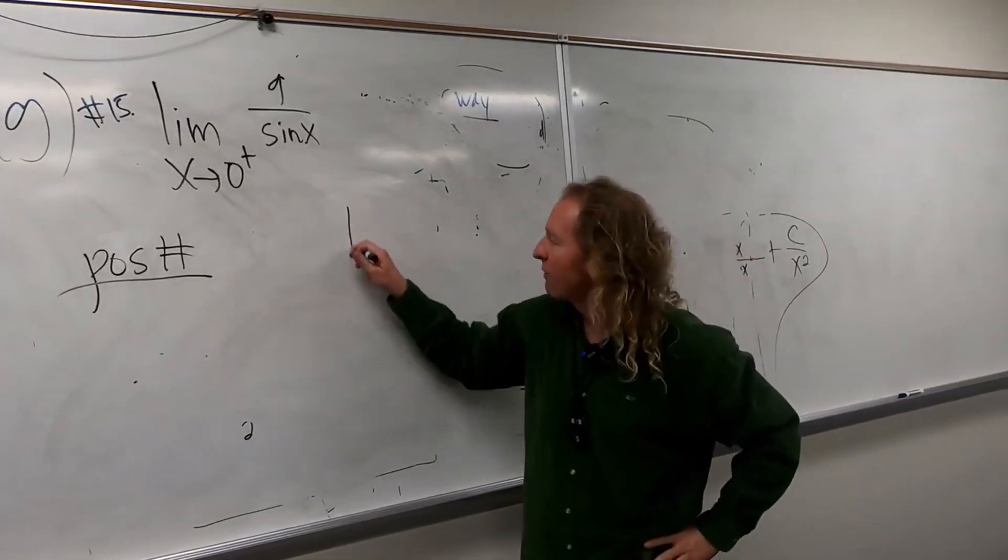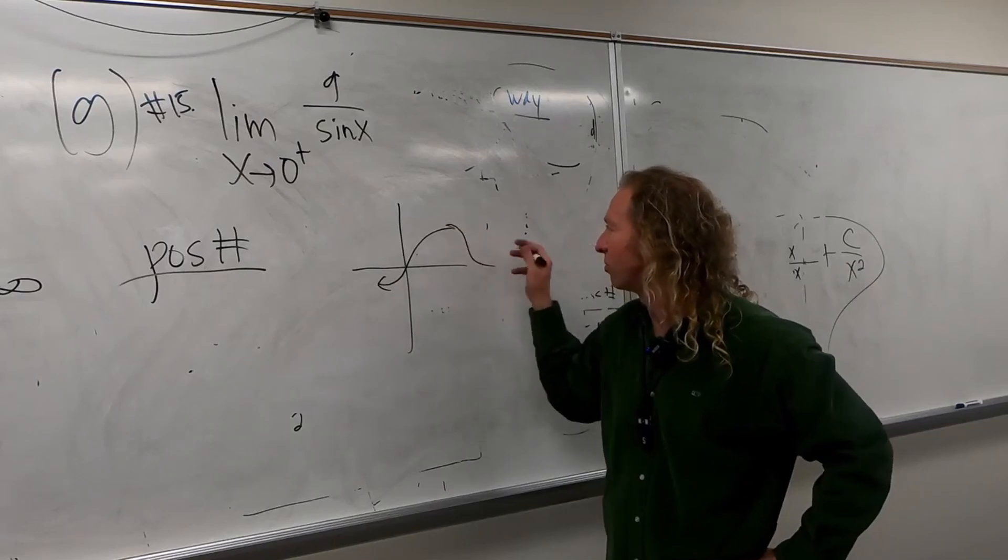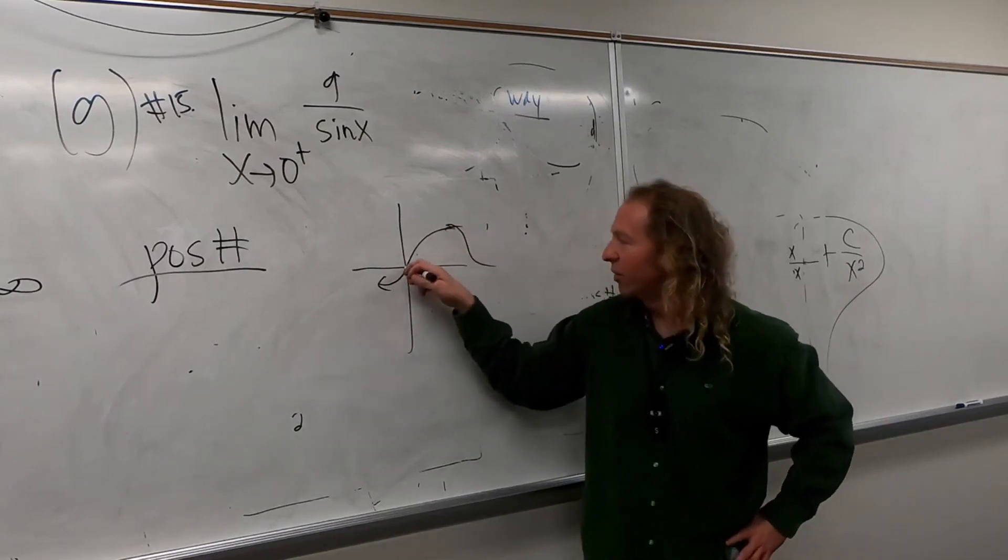So let's draw the graph of sine. So it looks like this, et cetera. It keeps going, you know. That's a terrible graph, but yeah. So here's zero.